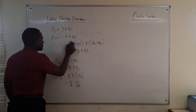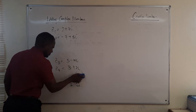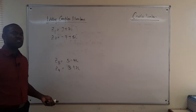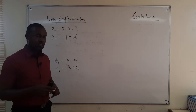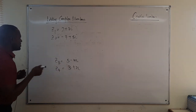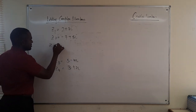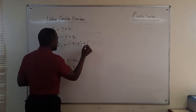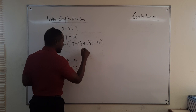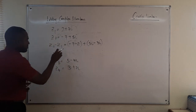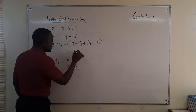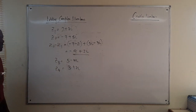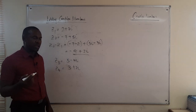Subtraction of complex numbers is similar to addition — we subtract the real parts and subtract the imaginary parts. For z2 minus z1, where z1 equals 2 plus 3i and z2 equals minus 7 plus 5i: real parts minus 7 minus 2 give minus 9, and imaginary parts 5i minus 3i give 2i. So z2 minus z1 equals minus 9 plus 2i.